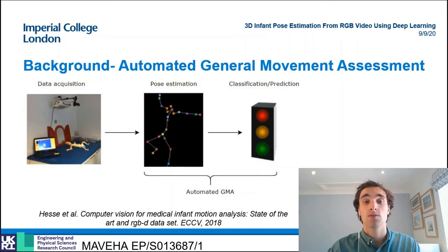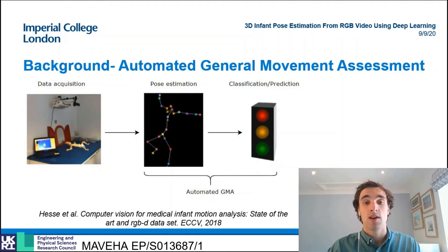Currently there are a number of disorders, such as cerebral palsy, which can be diagnosed via the analysis of an infant's movement quality. This is done by the qualitative assessment of a video of an infant by a highly trained clinician. This has inherent human variability and is also resource intensive though. Therefore, the widespread use of such an assessment is limited.